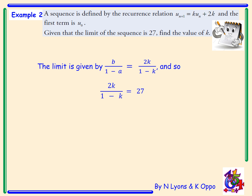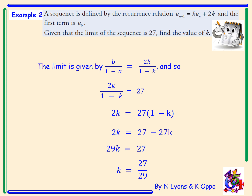We rearrange by multiplying both sides by (1 − k) to get 2k = 27(1 − k). Expanding the right-hand side: 27 × 1 = 27 and 27 × (−k) = −27k. Rearranging to collect k terms: 2k + 27k = 27, giving 29k = 27. Dividing by 29, the value of k is 27/29.